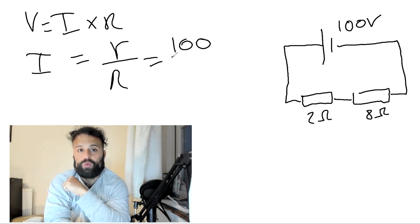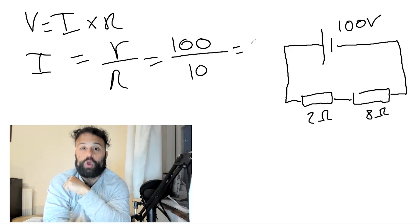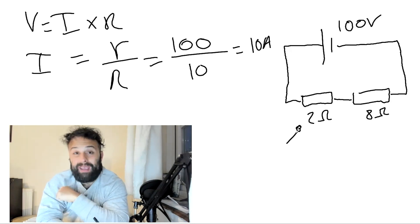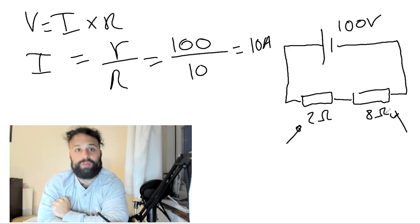Now the voltage total is 100 volts. The total resistance is 2 plus 8, which is 10. So the total current is 10 amps. So 10 amps pass through here, and 10 amps also passes through there.